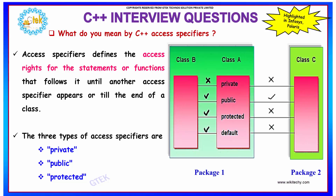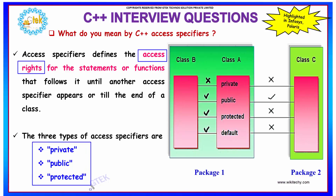What do you mean by C++ access specifiers? Access specifiers define the access rights for the statements or functions that follow until another access specifier appears or till the end of a class. There are three types of access specifiers: private, public, and protected.